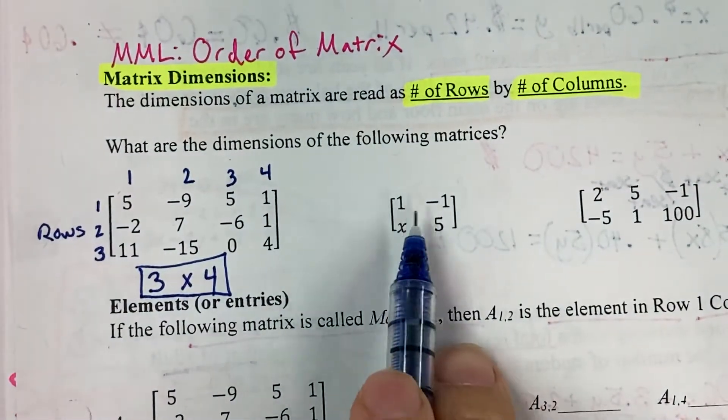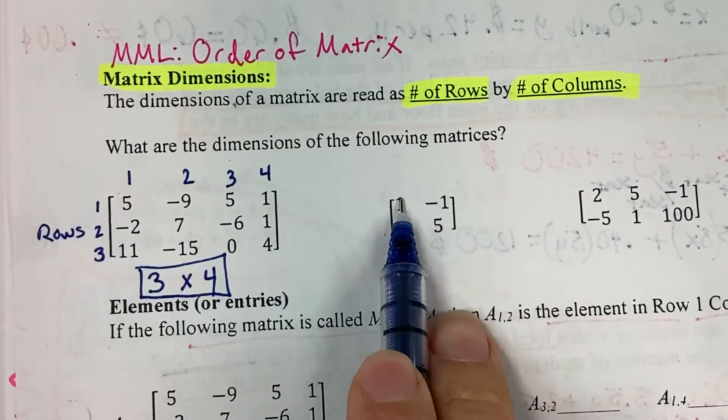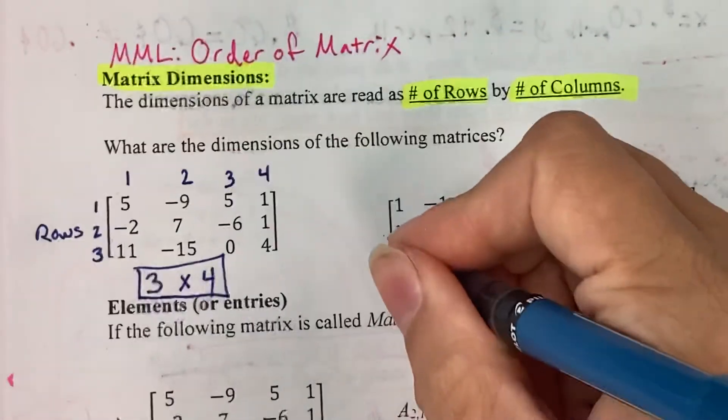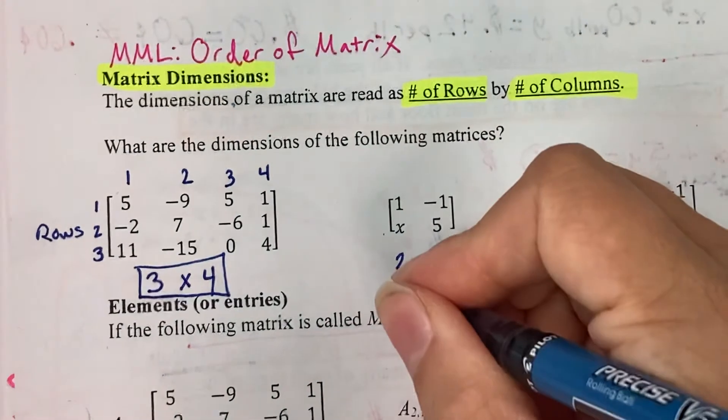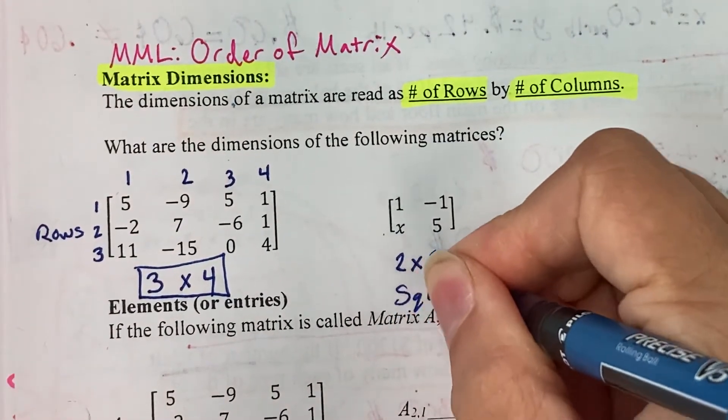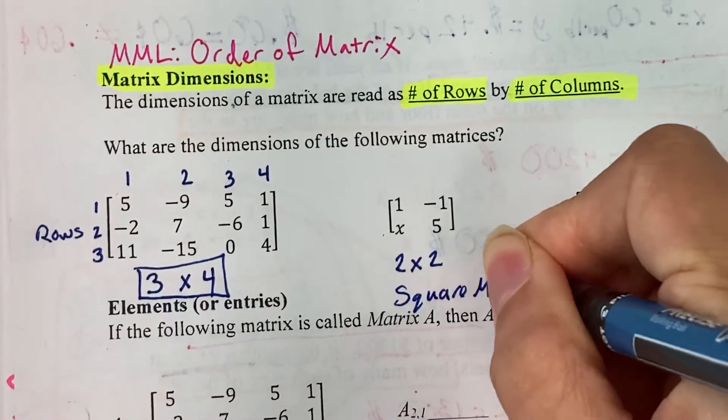On the next one, we have 2 rows and 2 columns. So this would be a 2 by 2 matrix, or also called a square matrix, where the number of rows equals the number of columns.